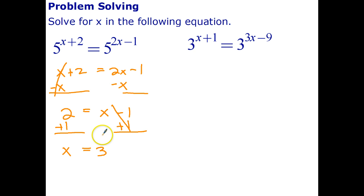And that gives us x equals 3. Let's do a quick check. 3 plus 2 is 5. So that's 5 to the 5. 3 times 2 is 6 minus 1 is 5. So that's correct.